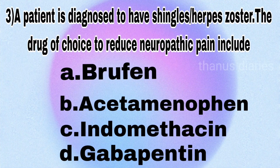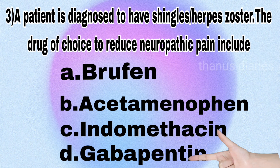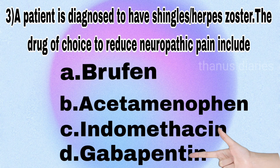Next question: a patient is diagnosed to have shingles or herpes zoster. The drug of choice to reduce neuropathic pain includes — brufen, acetaminophen, indomethacin, or gabapentin? It's gabapentin.